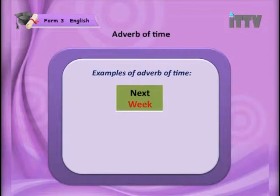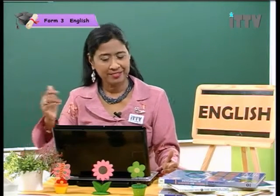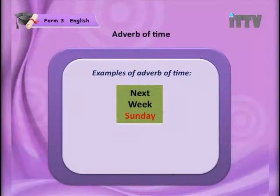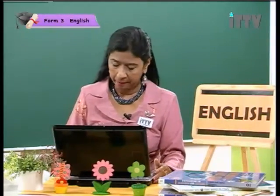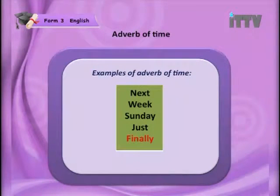More examples: 'soon after,' 'before.' When you look at all these examples, they tell you when something has happened. 'Next week' — when is this going to happen? Next week. Even 'week' on its own tells you the time. 'Sunday' — and remember, it's not only Sunday; all the days of the week tell you when something is going to happen, so they are adverbs of time. Finally, 'last month.'